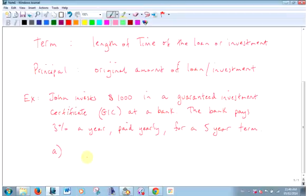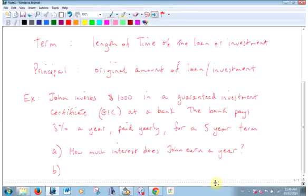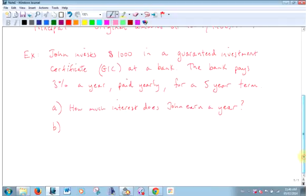A: How much interest does John earn a year? And B: what is the total value at maturity? More kind of, the wordage here is maturity. How much do I get back at the end of this whole thing, this investment, this term? At five years, how much am I going to get back? That's what it means, at maturity.